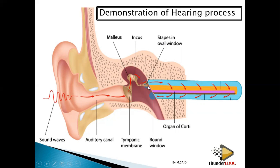The vibration is being transmitted into the fluid of the inner ear. The oval window causes the fluid in the cochlea — the perilymph — to vibrate. As it vibrates, it makes a wave.